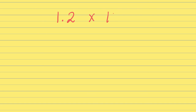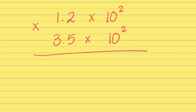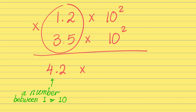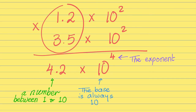Let's try something cool: 1.2 × 10² times 3.5 × 10². Can you multiply these two? First, multiply the m's: 1.2 times 3.5 is 4.2. Multiply by base 10 — when multiplying, you add the exponents: 2 plus 2 is 4. So you get 4.2 × 10⁴. Am I done? Not yet — how many significant figures in 1.2? Two. In 3.5? Two. The answer must have two significant figures — and 4.2 already has two significant figures. My answer is final: 4.2 × 10⁴.